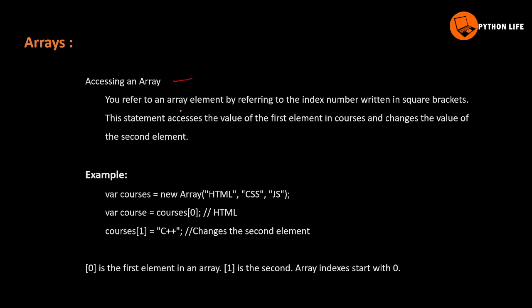You refer to an array element by referring to the index number. So here is the index number — HTML is at index zero, CSS is at index one, JavaScript is at index two. They are written in square brackets.